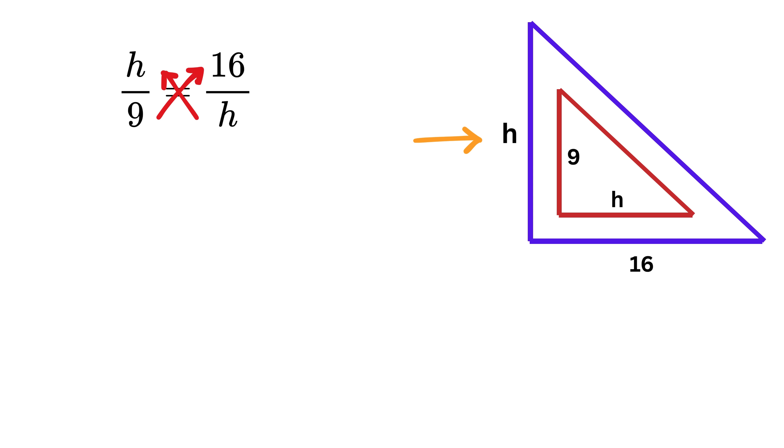Now, cross-multiply this, and you get H times H equals 9 times 16, or H squared equals 9 is 3 squared, and 16 is 4 squared, or it can be written as 3 times 4 whole squared, which is the same as 12 squared. This means H equals 12 units. Boom!